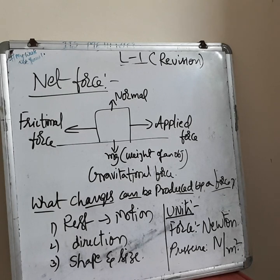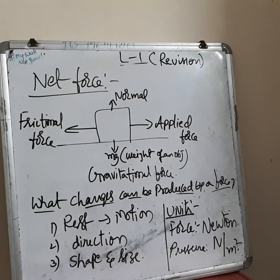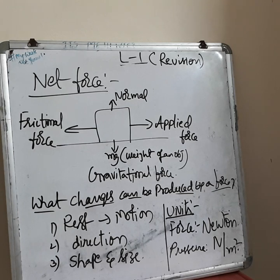FBD means free body diagram — a diagram showing all the relevant forces acting on a body. Refer to your textbook for this. When a force acts on an object, changes can be produced: if an object is at rest and you apply force, the object may start moving — there is a change in motion. If an object is moving and you apply force, you can stop it.